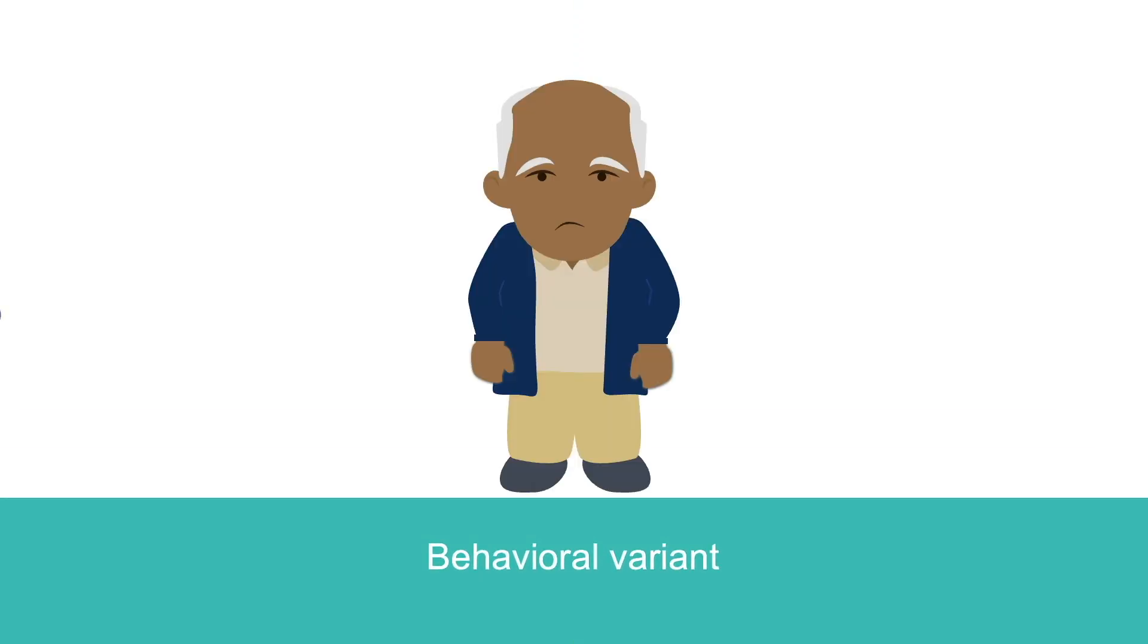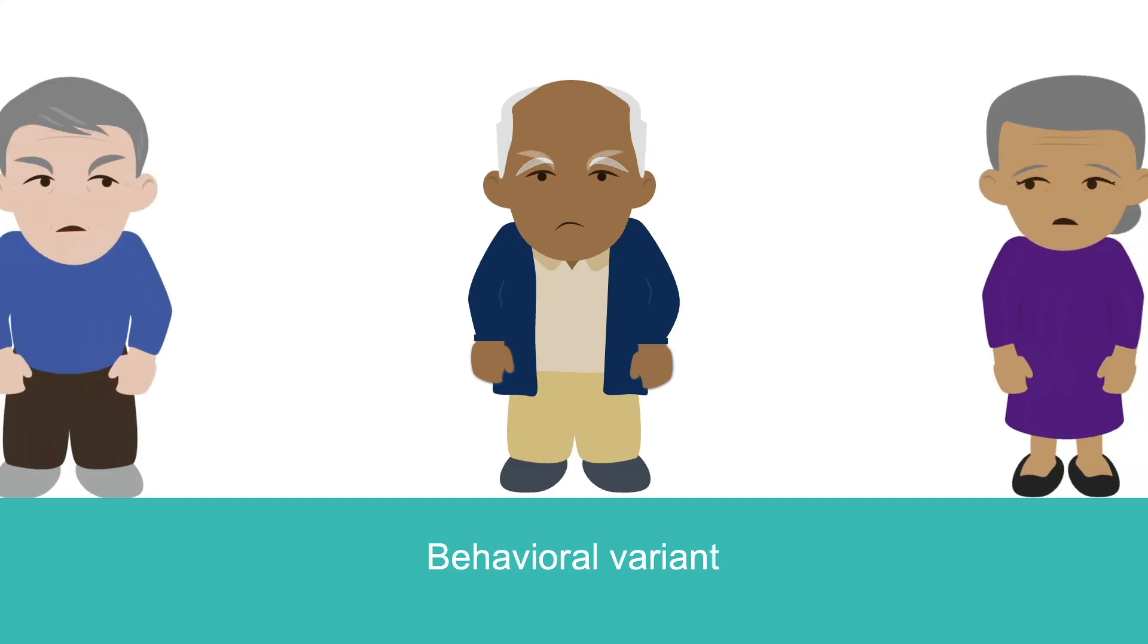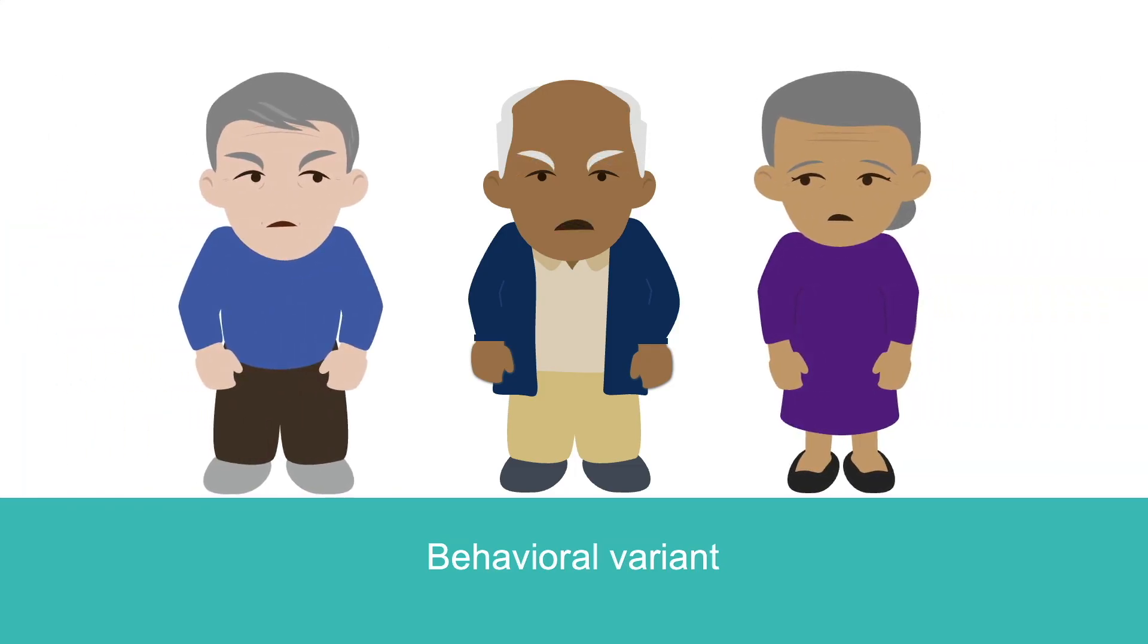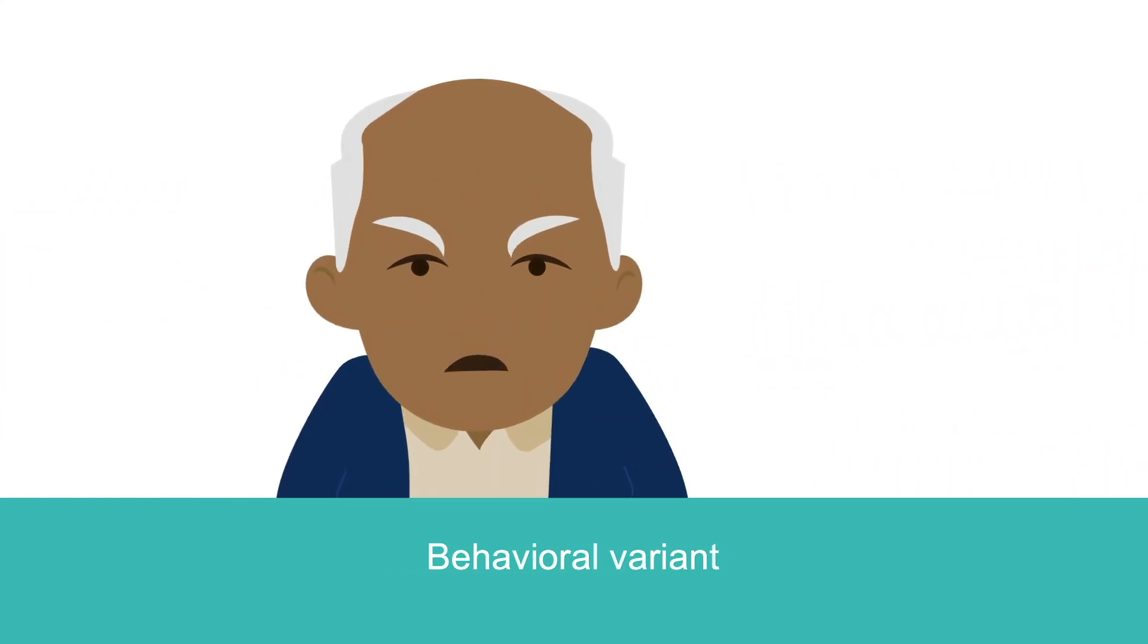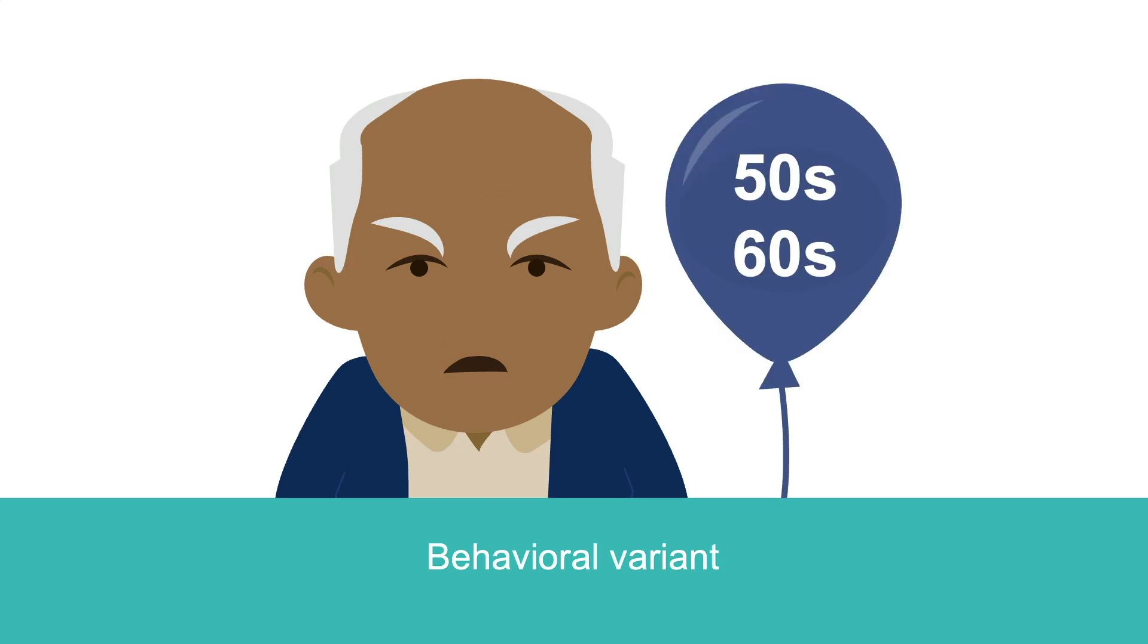Behavioral variant FTD is characterized by impaired reasoning and executive function early in disease, out of proportion with the decline in memory. This results in impulsivity or compulsive behaviors that may be drastic and often cause rifts in interpersonal relationships. This type of FTD often affects people early, in their 50s or 60s.